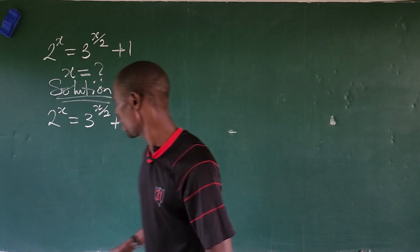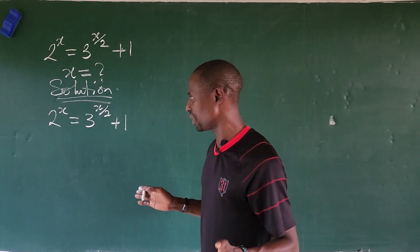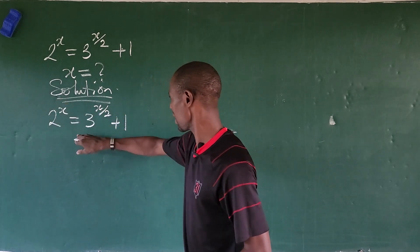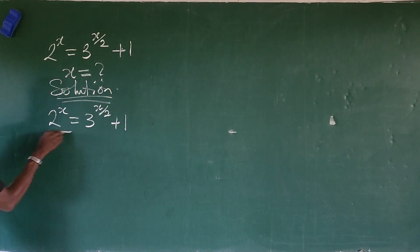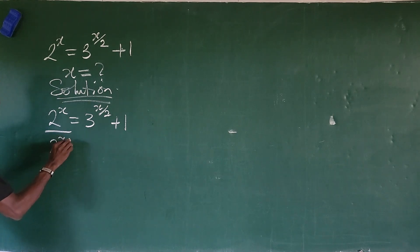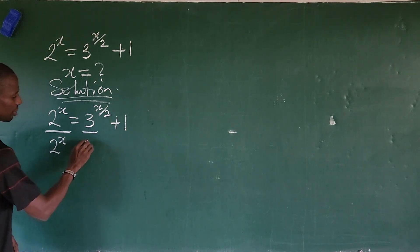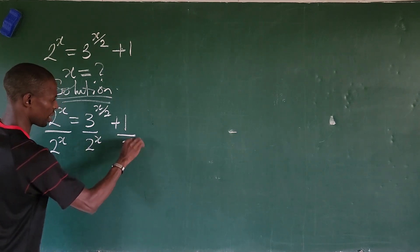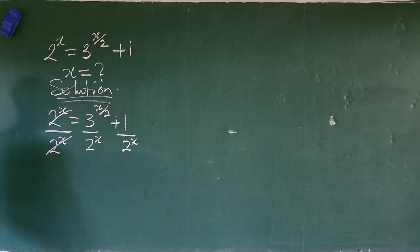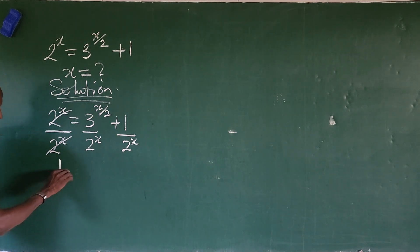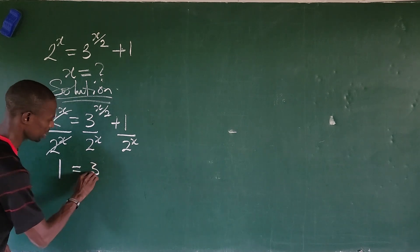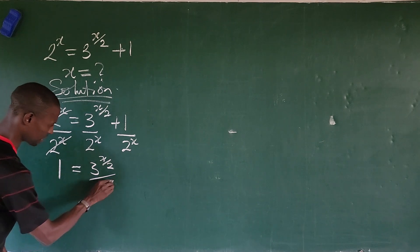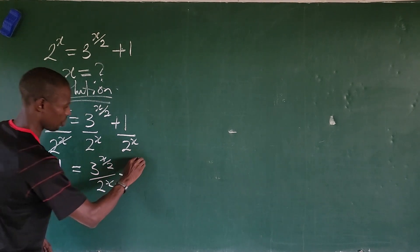The first thing we're going to do here is to make one side of the equation equal to unity. So what we do is divide through by 2 to the power of x. If we do this, we divide every term by 2 to the power of x, and this leaves us with: 1 is equal to 3 to the power of x over 2, all over 2 to the power of x, plus 1 over 2 to the power of x.